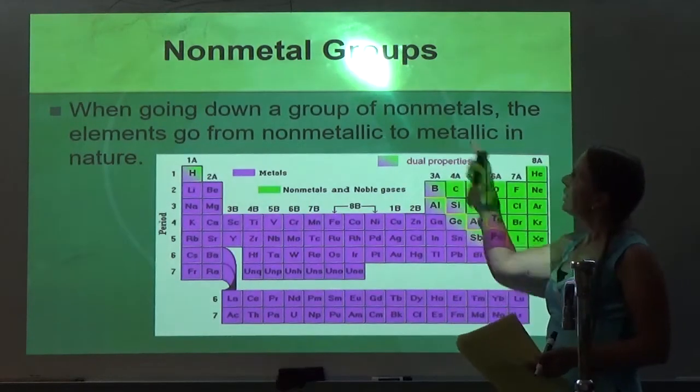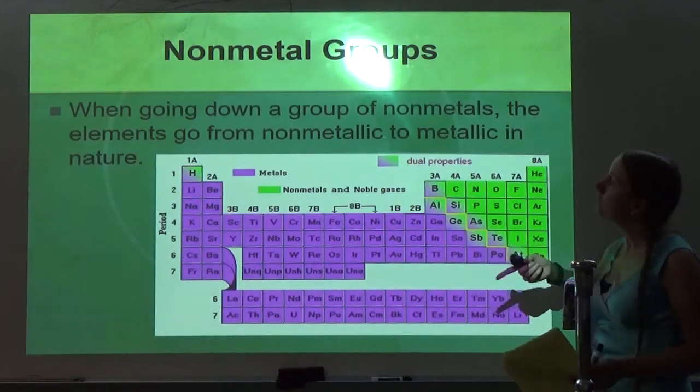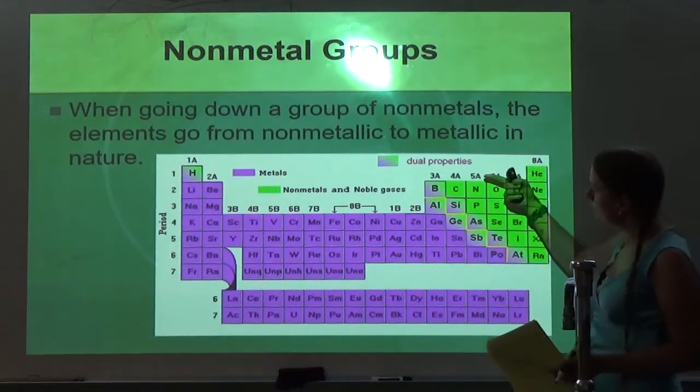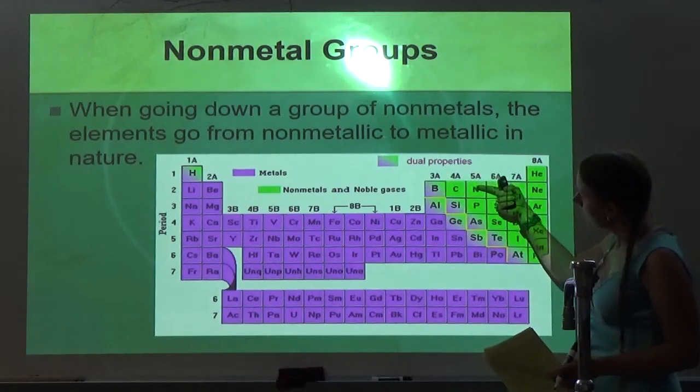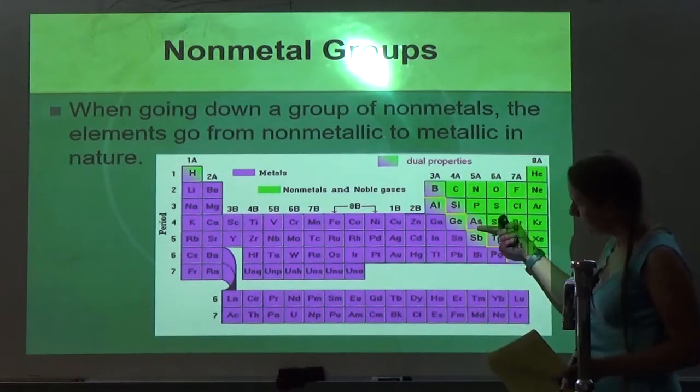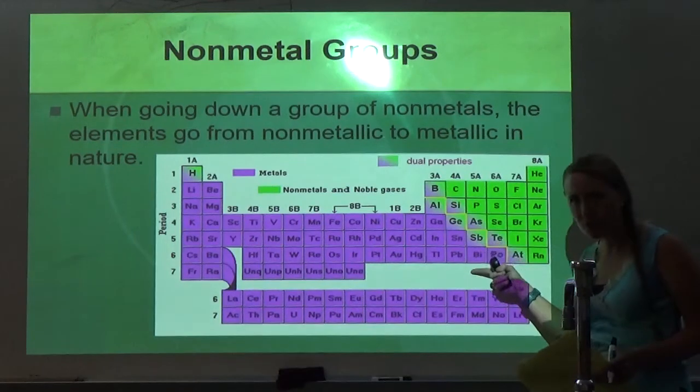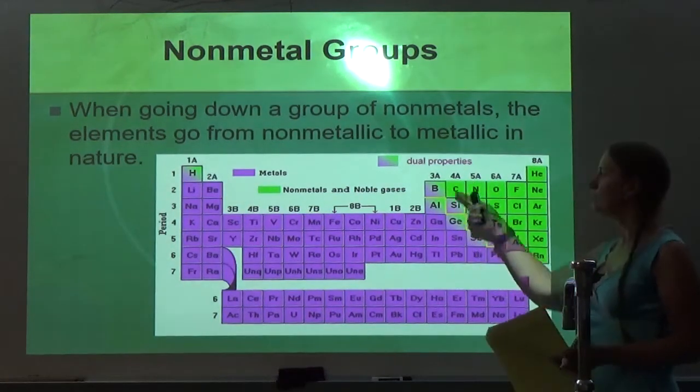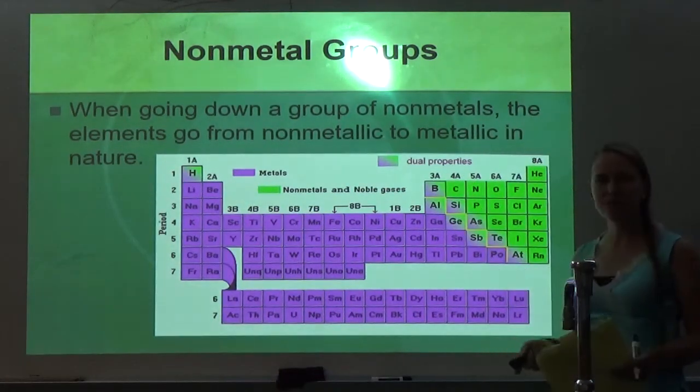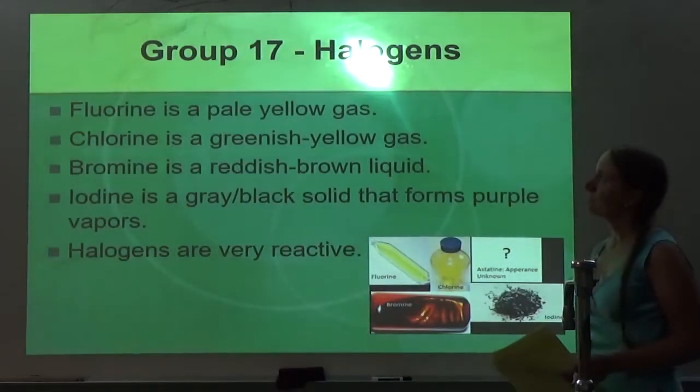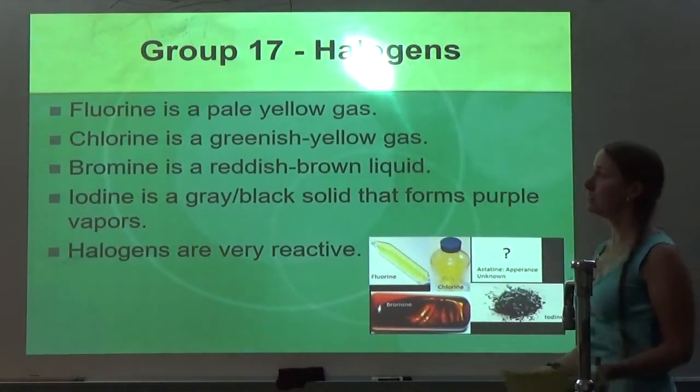So non-metals, when you go down a group of non-metals, the elements go from non-metallic to metallic. If you look, we start out with non-metals. Then we hit metalloids. Then we hit metal. So the lower you go, the more metallic a substance is on the non-metal side.